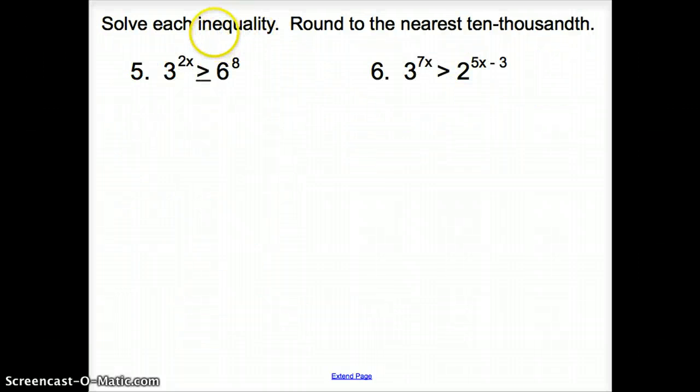Now we have a couple more. Now it's the same thing but now with inequalities. The process does not change with inequalities. So with number 5 here we have two exponents. We just have to take the log of both sides.